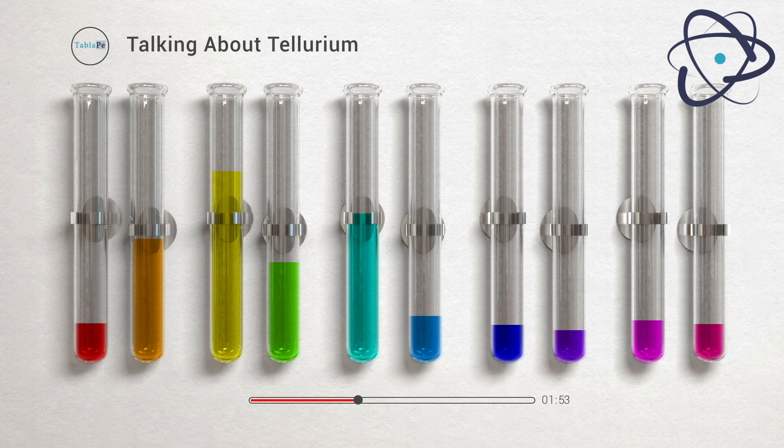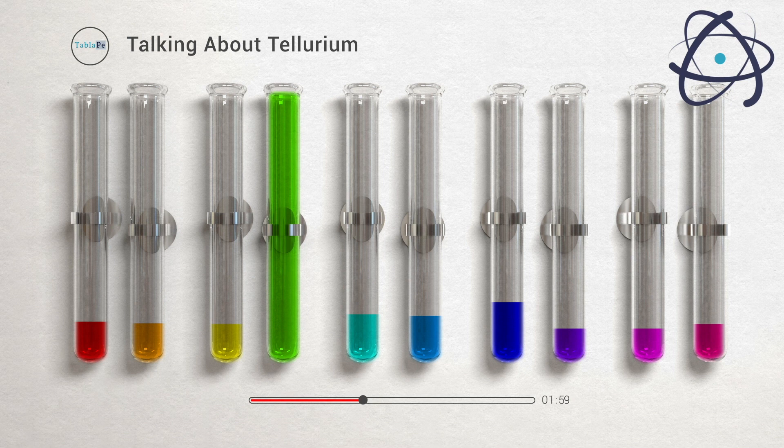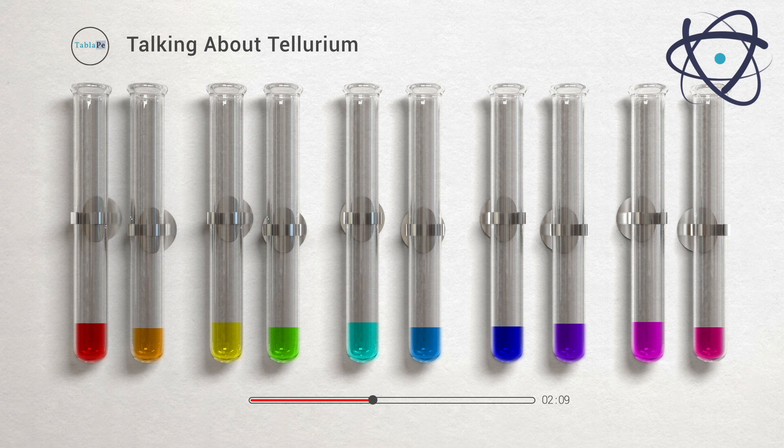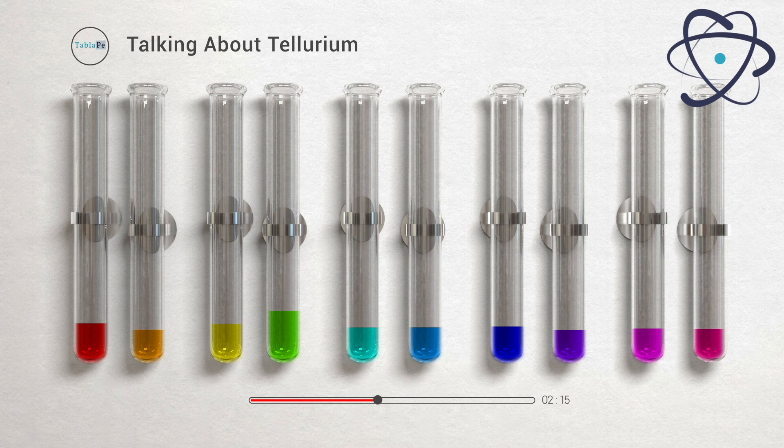Tellurium is an oxygen-based chalcogen that is found in some ores. Tellurium occurs in many minerals, including sylvanite and tellurite. However, this element is less common in metallic sulfide ores.